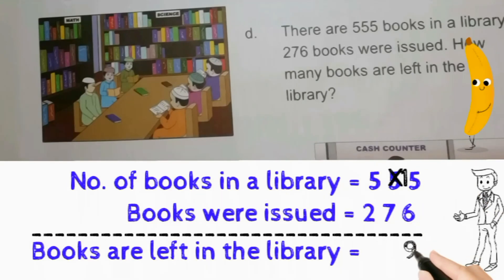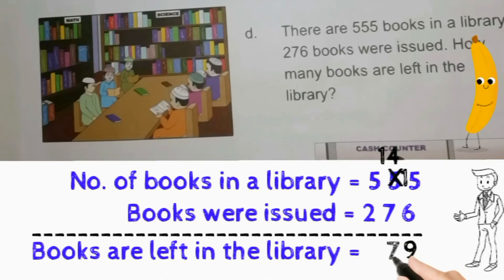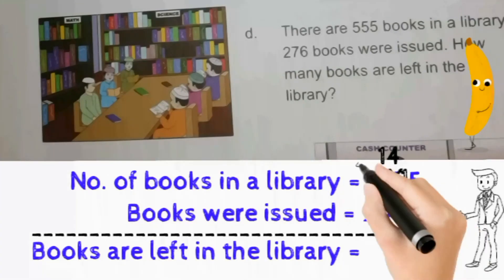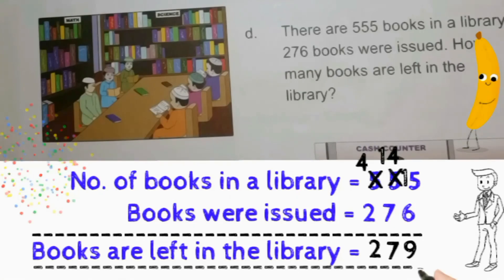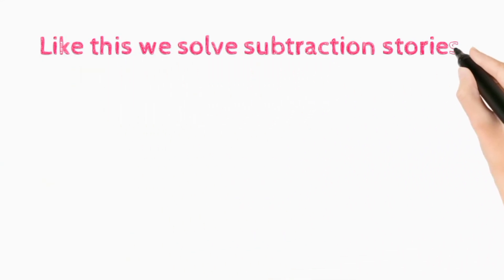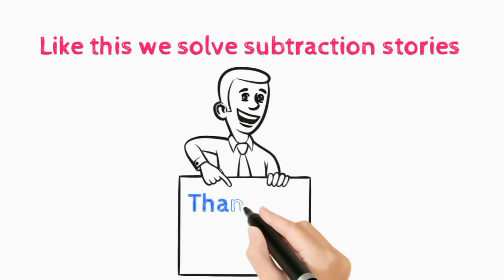Number of books in a library equals 555. Books were issued equals 276. And books are left in the library equals 279. Like this we do subtraction stories. Thank you.